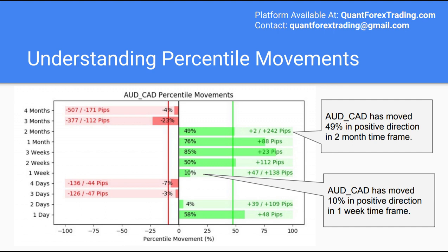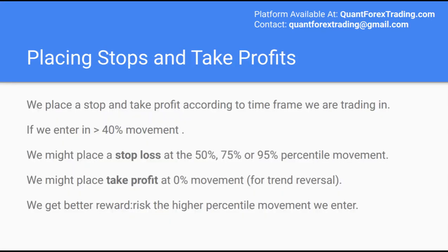We ultimately want the stop loss to be reached as infrequently as possible, so it's important to be realistic about how far a currency pair could move against us before we can expect the pair to reverse in our favour. We are going to look at the best timeframe to trade over. To do this, we typically look for an entry on a timeframe that has a large percentile movement against the direction we hope to trade in, as it gives us the best reward to risk profile. As a minimum, we will only enter a trade if the percentile movement is greater than 40% against the direction we hope to trade in, often referred to as buying or selling the dip of a general belief trend.